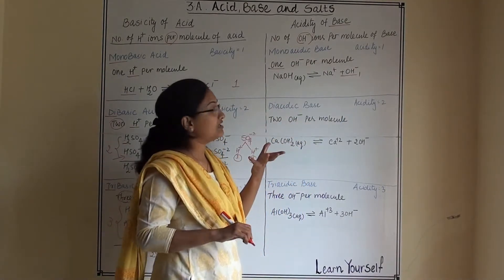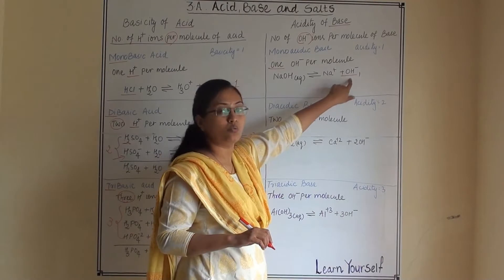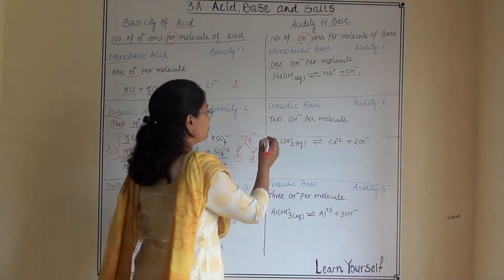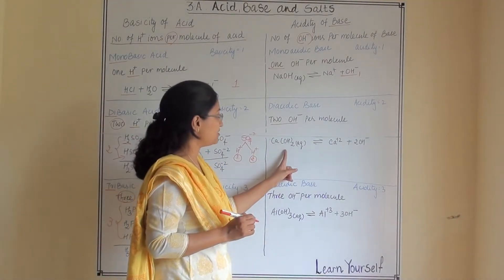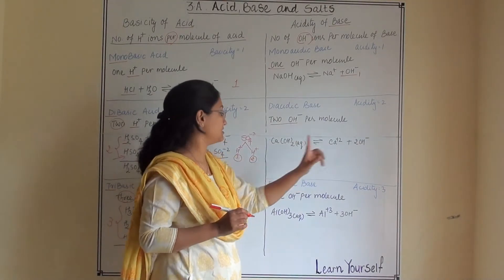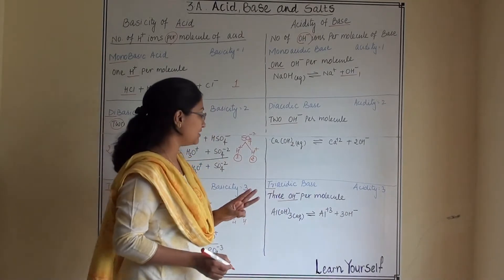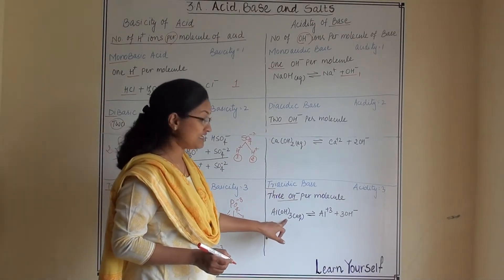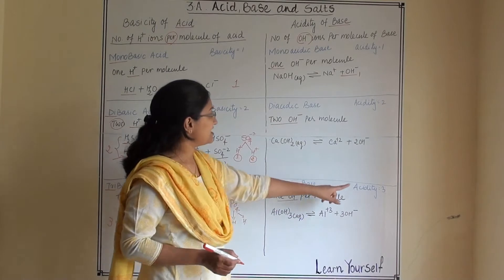For example, if they ask the acidity of NaOH, the answer is one because it generates one hydroxyl ion on dissociation. Diacidic base gives two hydroxyl ions — calcium hydroxide Ca(OH)2 dissociates to give Ca²+ and two OH-. Triacidic base gives three hydroxyl ions per molecule — aluminium hydroxide Al(OH)3 dissociates to give Al³+ and three OH-. The acidity is three.